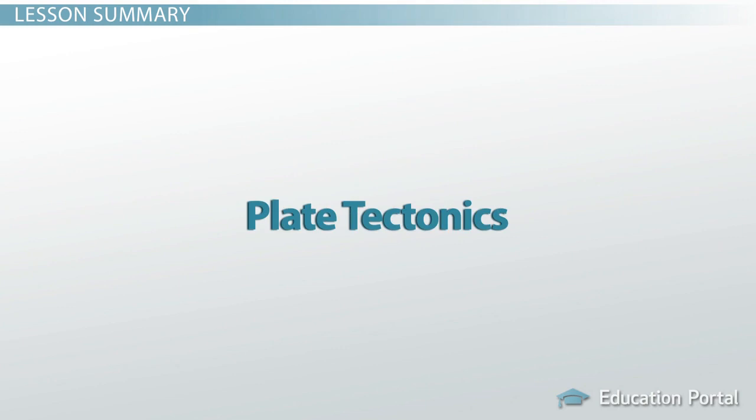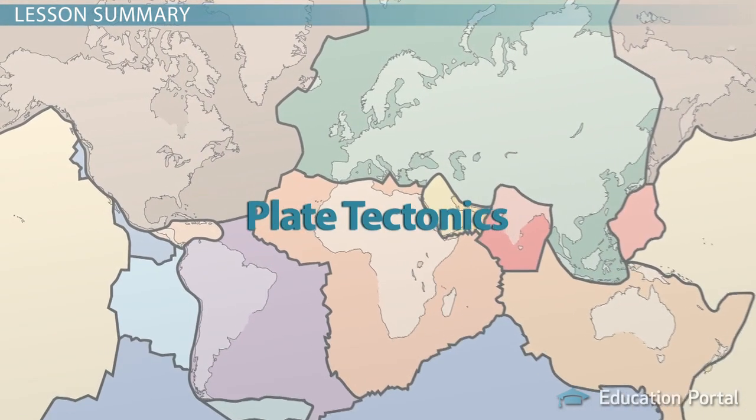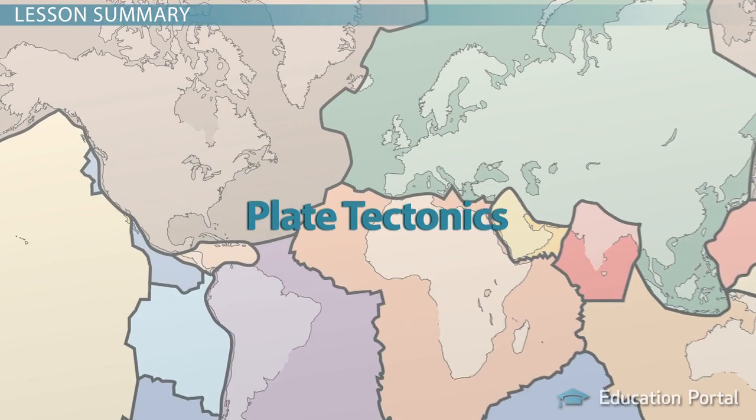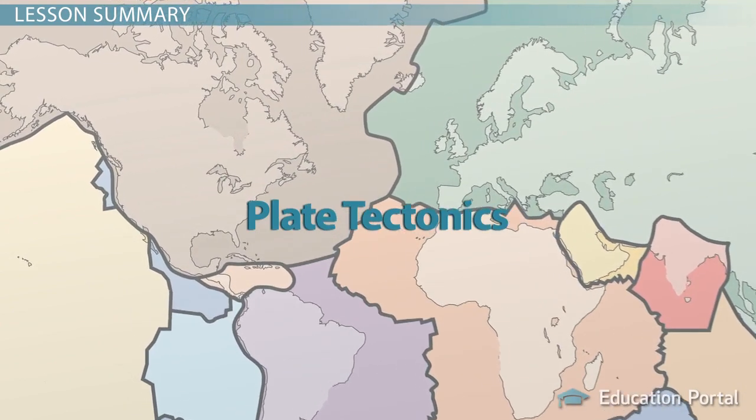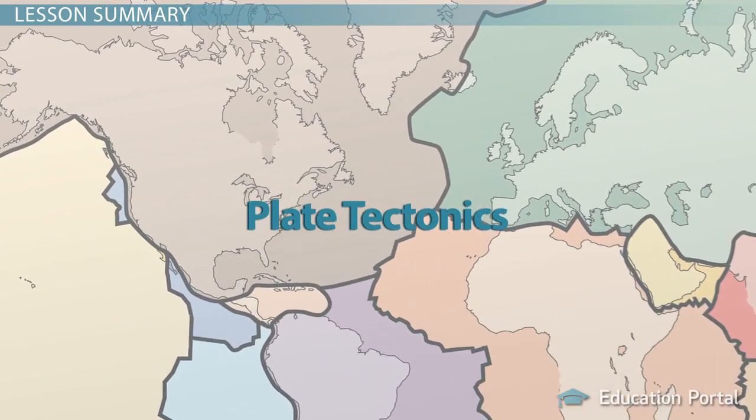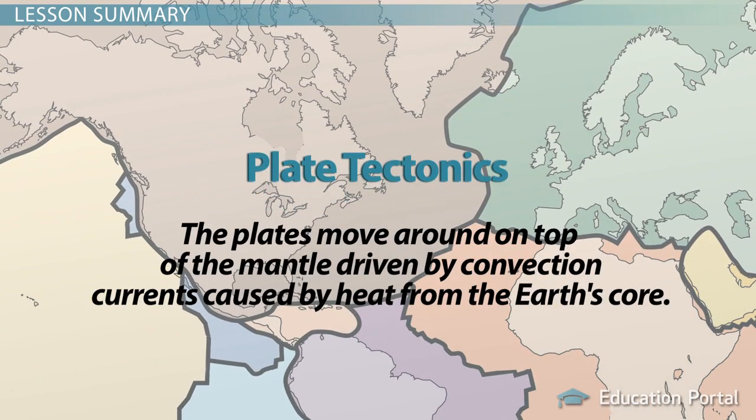Plate tectonics is the theory that unified all the puzzling data from early observations, accounted for the movement of the plates of the earth, and gave a mechanism for how the plates actually moved around. The theory stated that the plates moved around on top of the mantle driven by convection currents caused by heat from the earth's core.